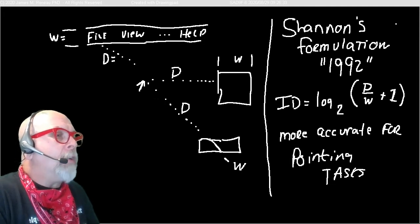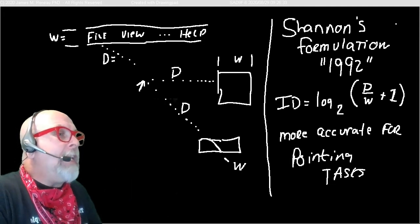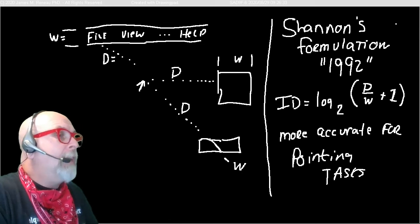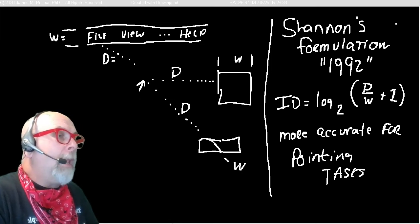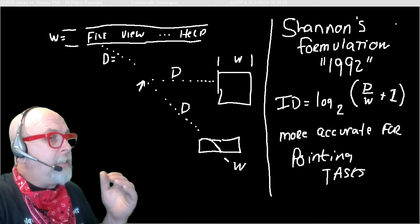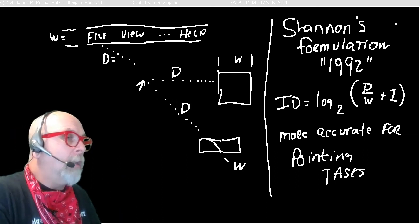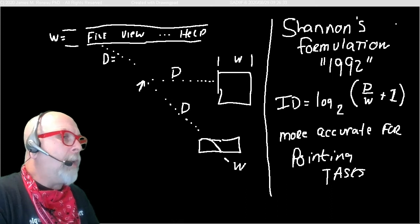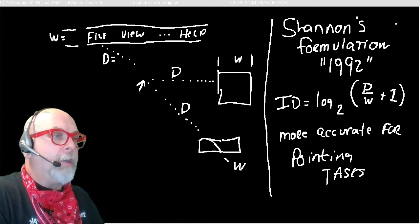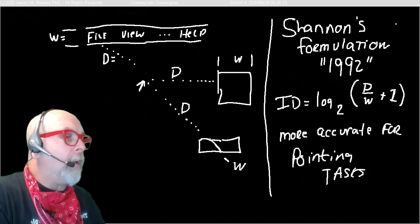Are more accurate to use the formula index of difficulty equals log base 2 of distance divided by width plus 1. So divide distance by width, add 1, and then calculate the logarithm base 2 to calculate the index of difficulties for target, pointing at targets.